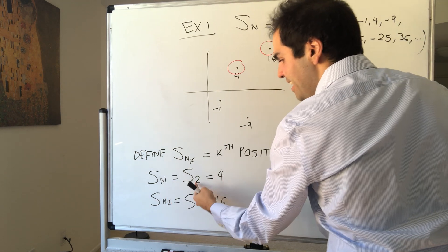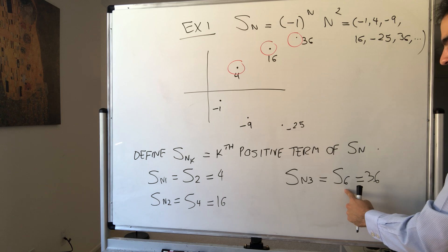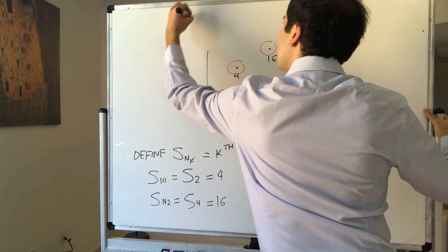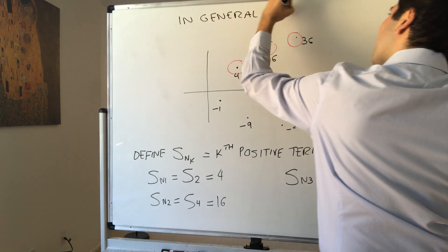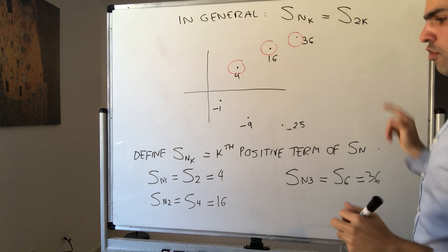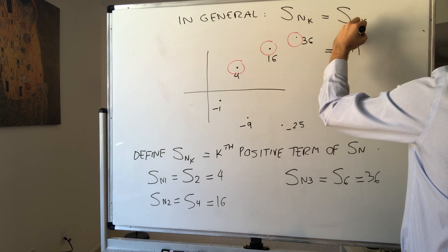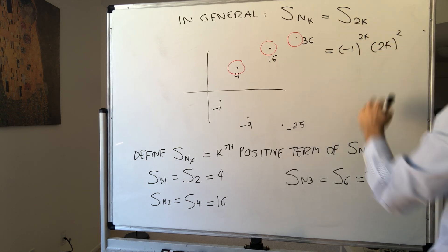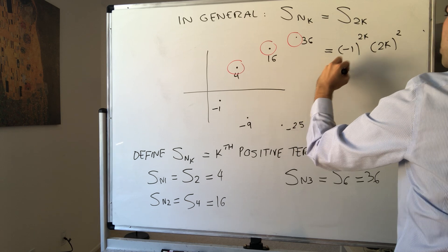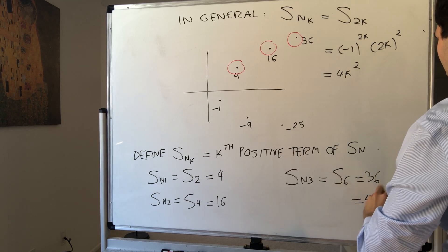And I don't know if you notice a pattern. So Sn1 is S2. Sn2 is 4, which is 2 times 2. Sn3 is 6, which is 2 times 3. And in general, Sn3 is just S of 2k. You see, double of k. Like here, 6 is double of 3. And that becomes minus 1 to the 2k times 2k squared. That's just the definition of Sn. But this is even, so this becomes plus 1. So in the end, we have 4k squared. Which makes sense. For instance, 36, it's 4 times 3 squared.